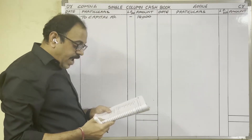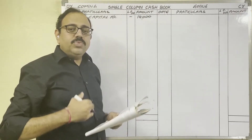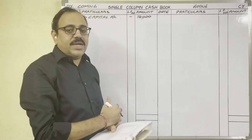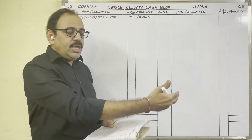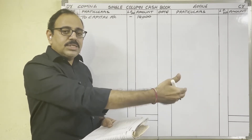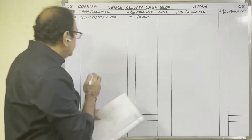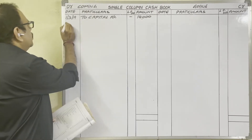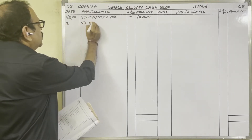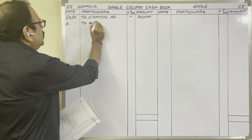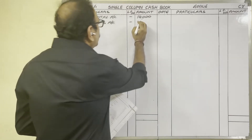3rd March: cash sales 2,000 rupees. The firm sold goods to a customer for cash, so goods are going out and cash is coming in — debit side. Write: To Sales account, 2,000 rupees.